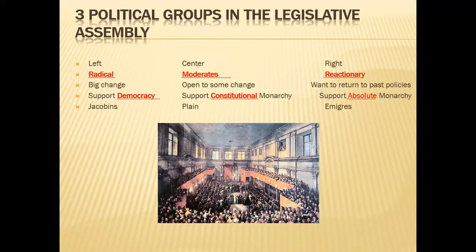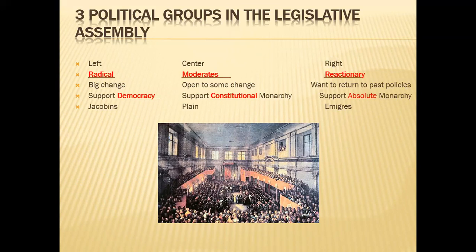The three groups in the National Assembly are: the radical left — the Jacobins — who support democracy and huge changes, wanting to completely toss out the old system and start fresh; the moderates in the center, who believe a constitutional monarchy is the way to go, finding a reasonable deal between the two sides; and the right, which is reactionary and wants to keep absolute monarchy.